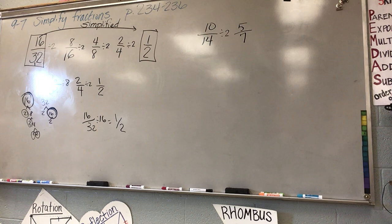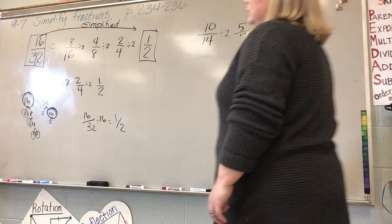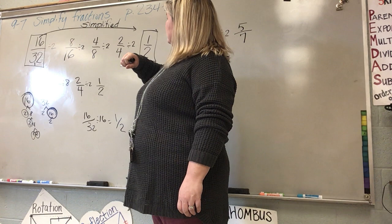You're done. Yes, ma'am? On 16 over 32, the numerator is the same as the denominator of the next one over. See, 8. Yeah, it is. It gets small. Yep. Because you're dividing it with 2. Yep. Good.